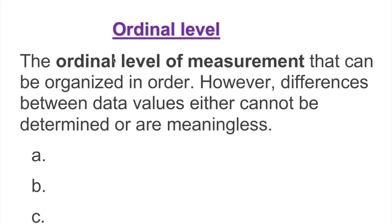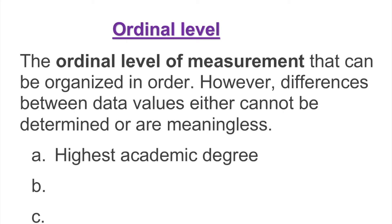The ordinal level of data sounds like order. The ordinal level of measurement can be organized in order; however, differences between data values either cannot be found or are meaningless. For example, the highest academic degree — you can order PhD, Master's, Bachelor of Science, and high school diploma. We know we can order them because a certain number of years of education is required for each.